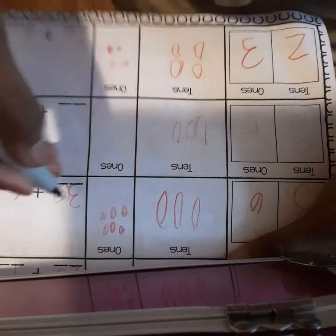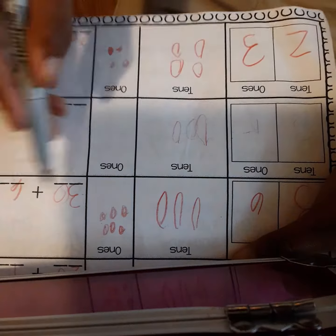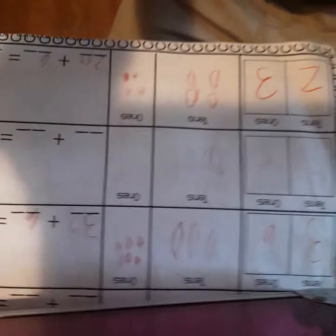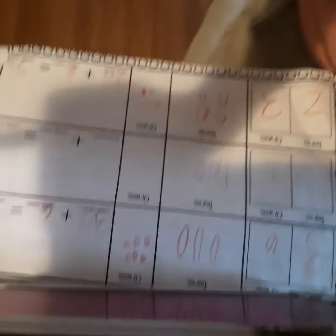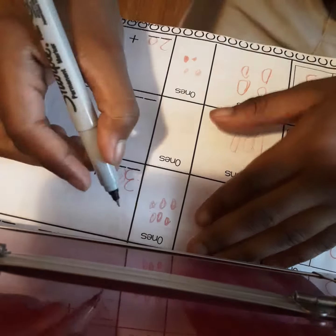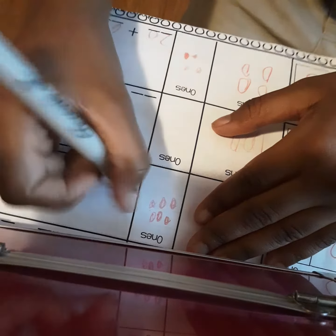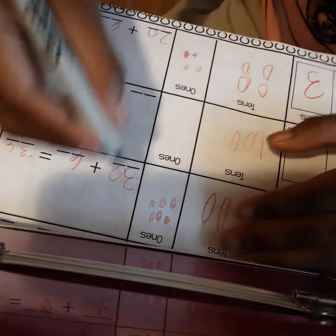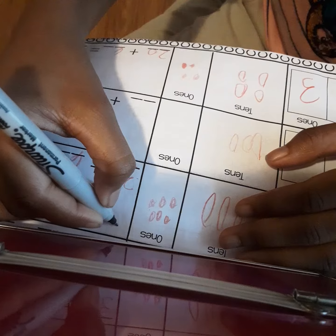So today we're going to be learning about the thirties and six. So put 30. We can turn 30 to 80, but what we're going to do is keep our traction.